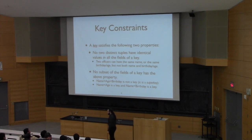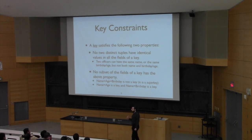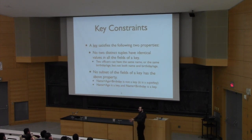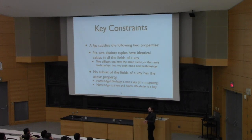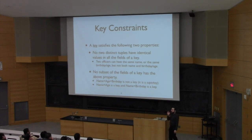A super key typically isn't used while modeling a database — it arises when you're trying to find a key. It's a way of saying this is a step towards a key, but it's not quite there yet. If I start with the attributes name, age, birthday and think about whether I can take any away and still have a key — if the answer is yes, then I have a super key. It's just a way of referring to something that isn't quite a key yet.